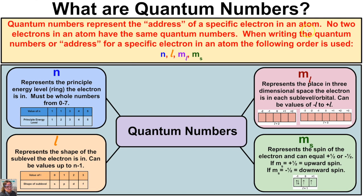No two electrons in an atom have the same quantum number. So a quantum number is essentially the address of a specific electron in a given atom. When we write the quantum numbers or address for a specific electron, the following order is used: n first, followed by l, followed by m sub l, followed by m sub s.